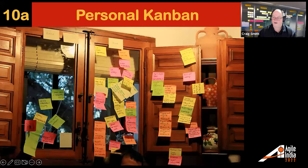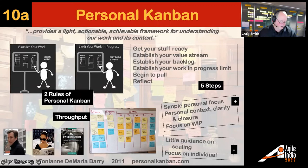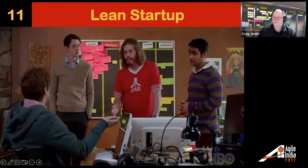At the same time David J. Anderson was working on Kanban, Jim Benson and Tonianne DeMaria Barry were working on Personal Kanban — essentially Kanban for your own to-do list. It has just two rules: visualize your work and limit your work in progress. That's important for your task list because we all know we can't multitask. It's not about scaling; it's about your own personal focus and practicing agility in your own space.